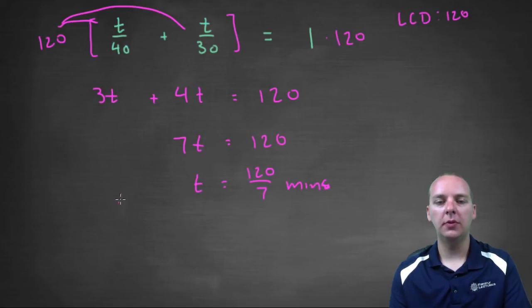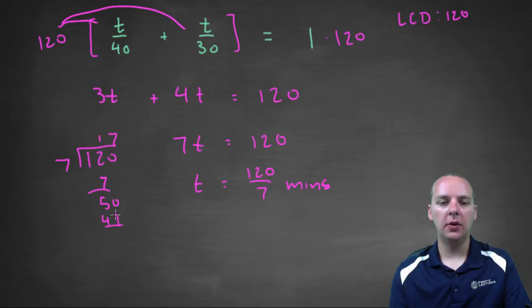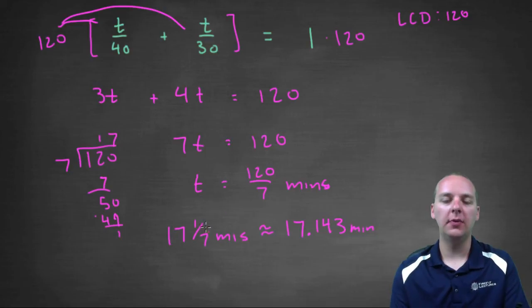So T would be 120 over 7 minutes, right, 120 over 7 minutes. So how much is that? Let's see here, 120, divide 7 into that, 7, 5, 0, 17, so 17 with a remainder of 1. So 17 and 1 7th minutes, which is approximately 17.143 minutes. If you take 1 divided by 7.